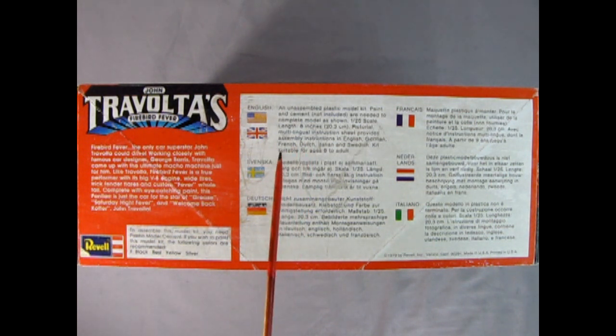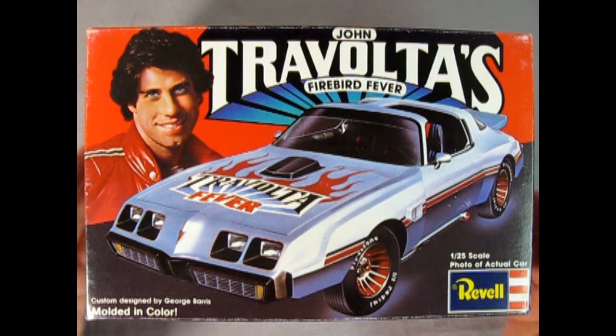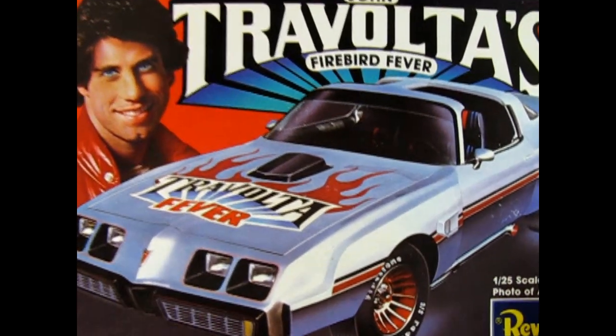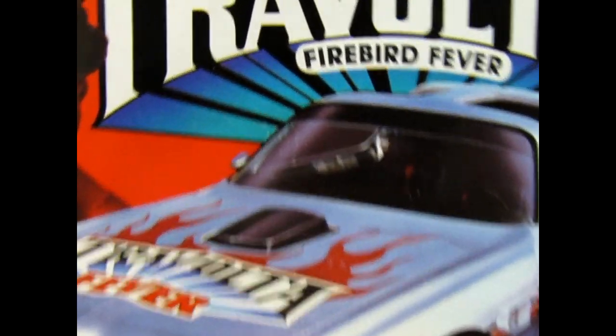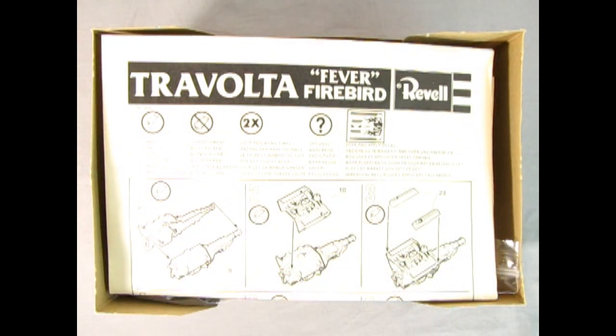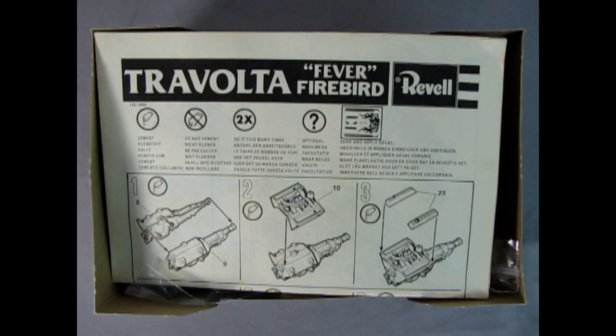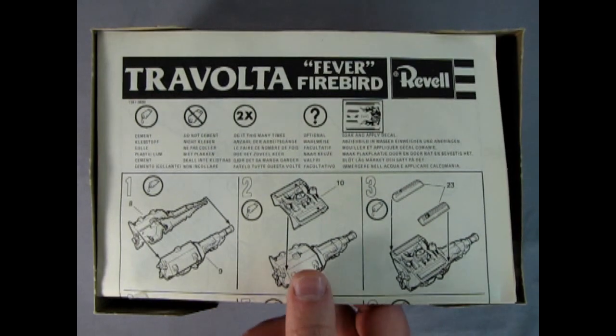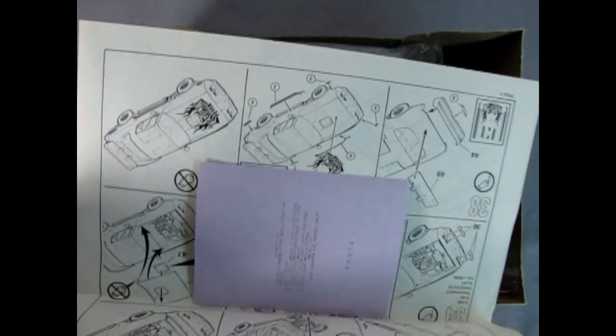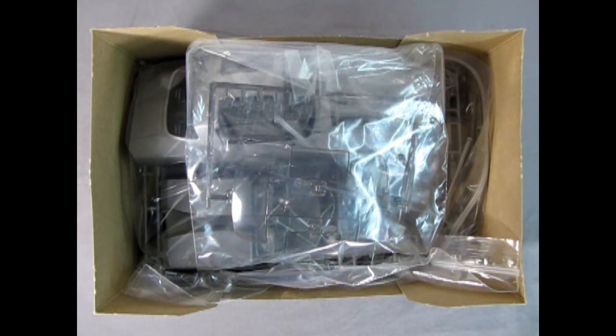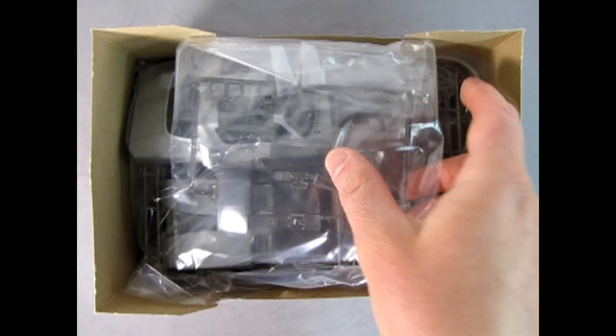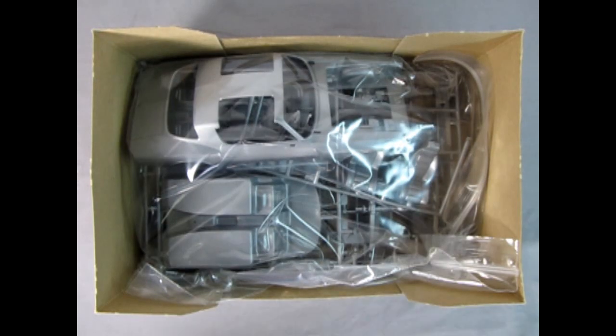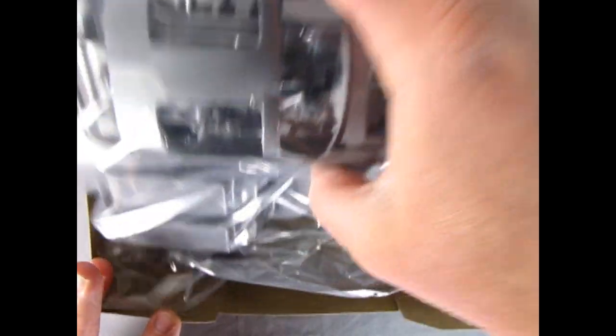On this side of the box we get further details and the backstory of John Travolta's Firebird Fever car. We get our instructions in English, Swedish, German, French, Dutch, and Italian. Now let's open the lid on John Travolta's Firebird Fever car and check out just how amazing this was for a model kit back in 1979. Inside the box we have our Travolta Fever Firebird instructions with the decal sheet inside, those nice smoke tinted windows in a plastic bag, all our gray components, and then at the bottom these are our tires.